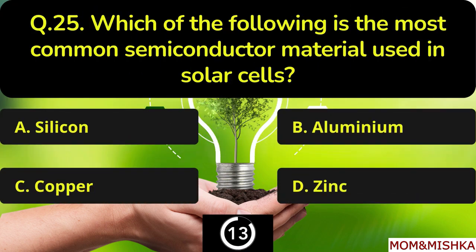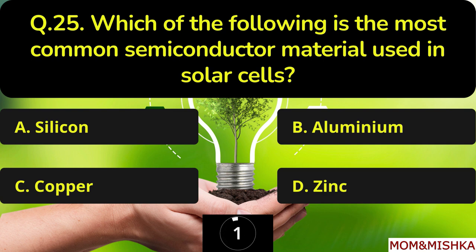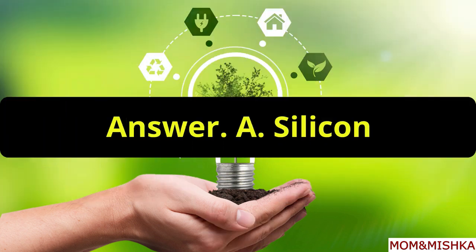Which of the following is the most common semiconductor material used in solar cells? Silicon, Option A.